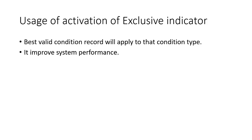It is not advisable and not best practice. Best practice says you should activate the exclusive indicator against each and every table within the access sequence. The benefit: first, it will show you the best valid condition record, meaning more specific to generic — out of all tables in the access sequence, the system will display or apply the best valid condition record for the condition type. Also, it improves system performance because unnecessarily it will not access remaining tables once a valid condition record is found. I hope this helps you understand the usage of the exclusive indicator. If it is helpful, please subscribe and like this channel. Thank you.